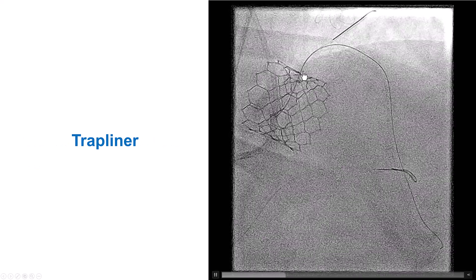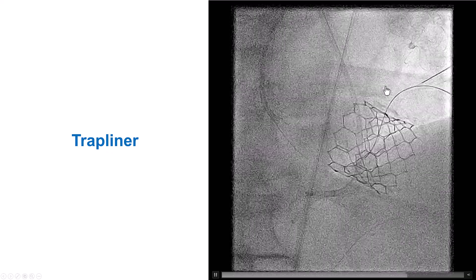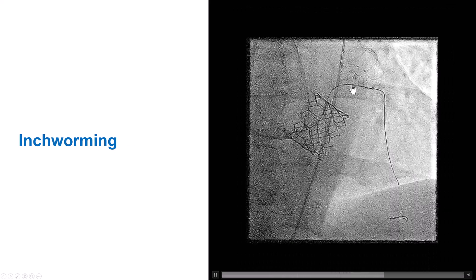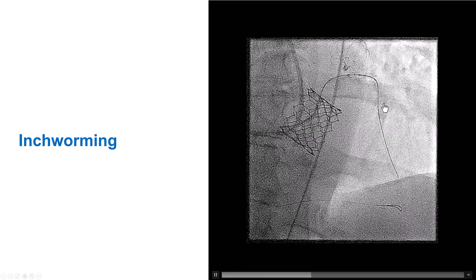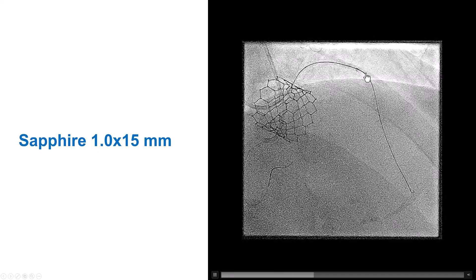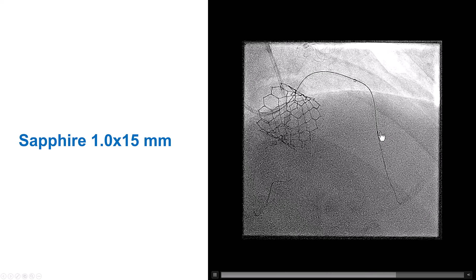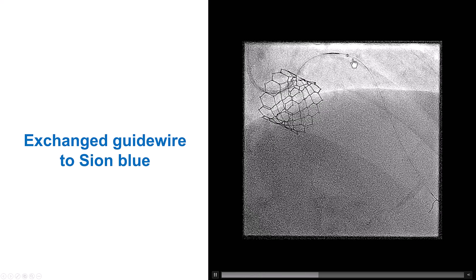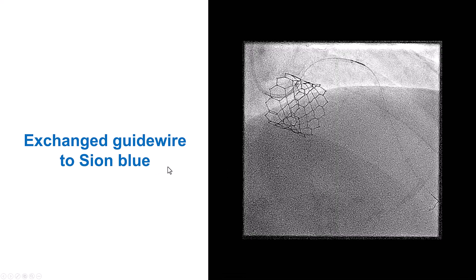The Trapliner had actually fallen outside the vessel, so we had to use various maneuvers to re-engage and get more support. We used the anchor balloon technique with a 2.0 mm balloon, and slowly advanced the Trapliner closer to the mid-LAD, which caused some pressure dampening. After having the Trapliner quite distally into the LAD, we were able to advance a 1.0 by 15 mm Sapphire balloon across the CTO area, pre-dilate, and then advance the Turnpike LP. We then switched the Gaia wire for a workhorse guide wire.